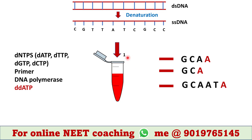In tube 1, ddATP is used. That means it will be incorporated into the DNA when the complementary base is thymine in the template DNA. As the template DNA contains 3 thymines, ddATP could be added in 3 places. Hence, we will get 3 types of DNA fragments here.